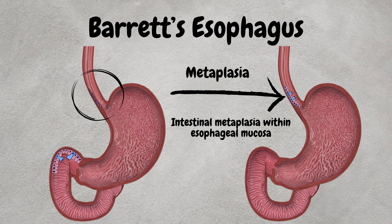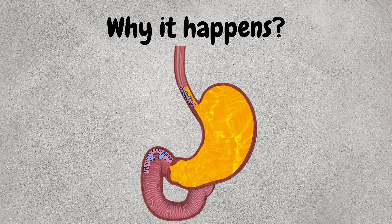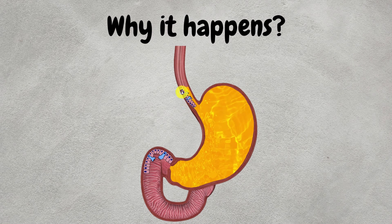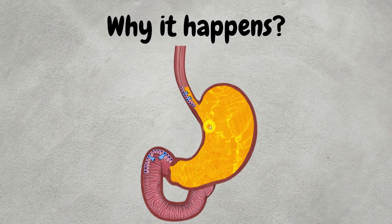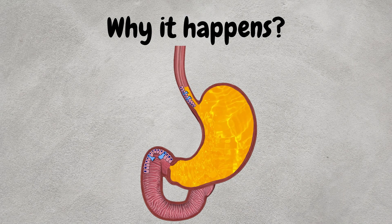So there is intestinal metaplasia within esophageal mucosa. Now let us see why this transformation happens. This transformation of the epithelium is primarily due to chronic exposure to stomach acid and is often associated with gastroesophageal reflux disease, also known as GERD.